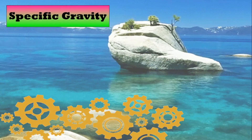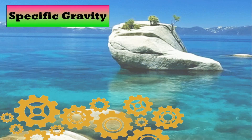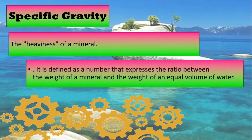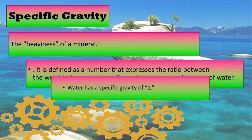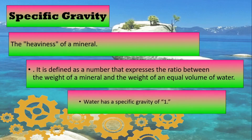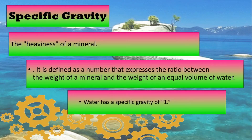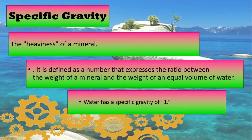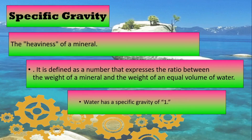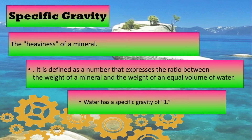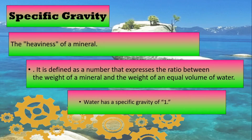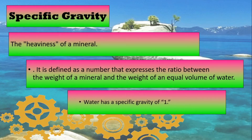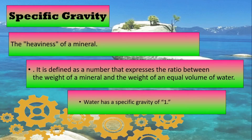The last physical property of a mineral is specific gravity. It is the heaviness of the mineral. It is defined as the number that expresses the ratio between the weight of the mineral and the weight of an equal volume of water. Water has a specific gravity of one.